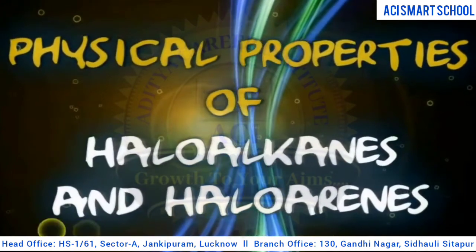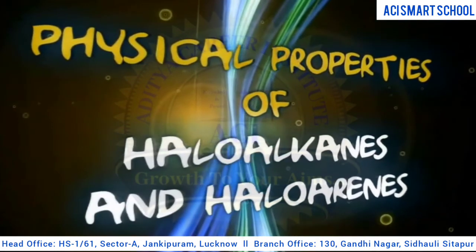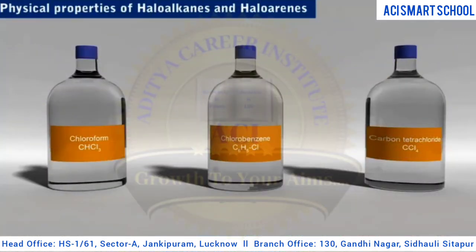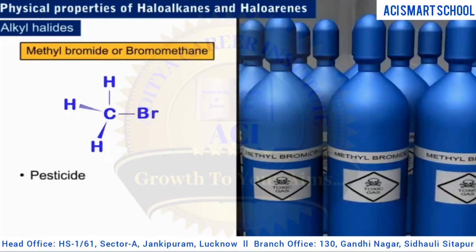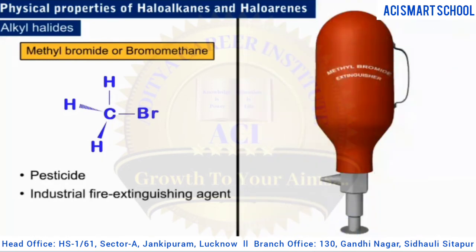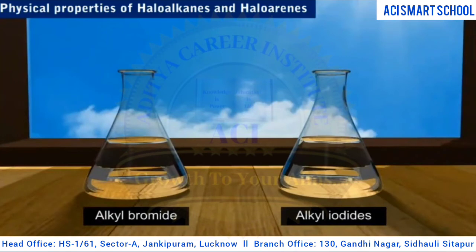In this module, we will be studying the physical properties of haloalkanes and haloarenes. Pure alkyl halides are colorless. For example, methyl bromide is a colorless gas that can be used as a pesticide; however, this use is being phased out due to its toxicity. Historically, it was used as an industrial fire extinguishing agent. Methyl bromide is also known to be an ozone-depleting chemical. The alkyl bromides and alkyl iodides may develop a color when exposed to light.